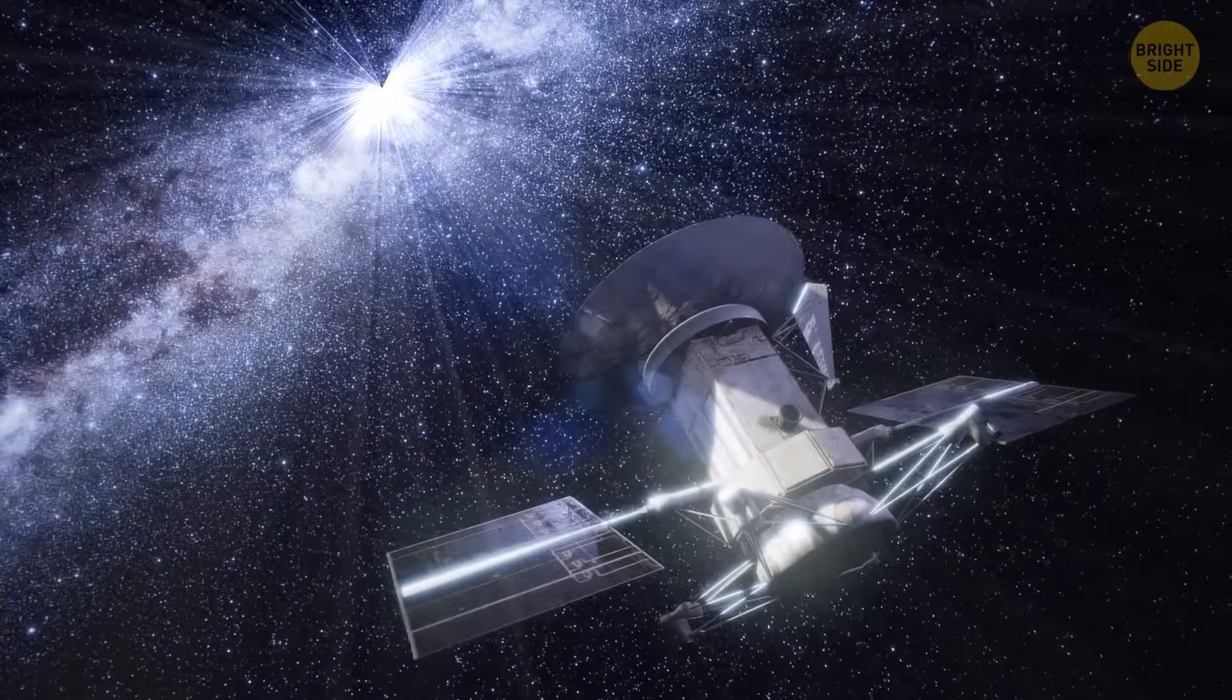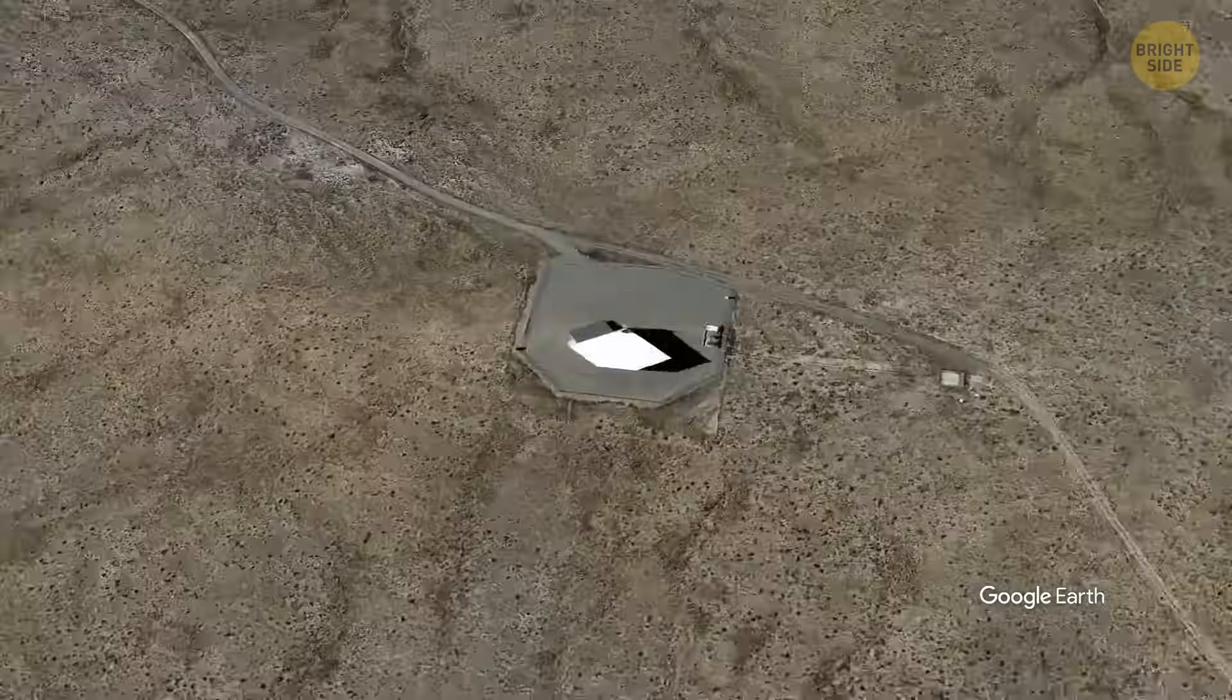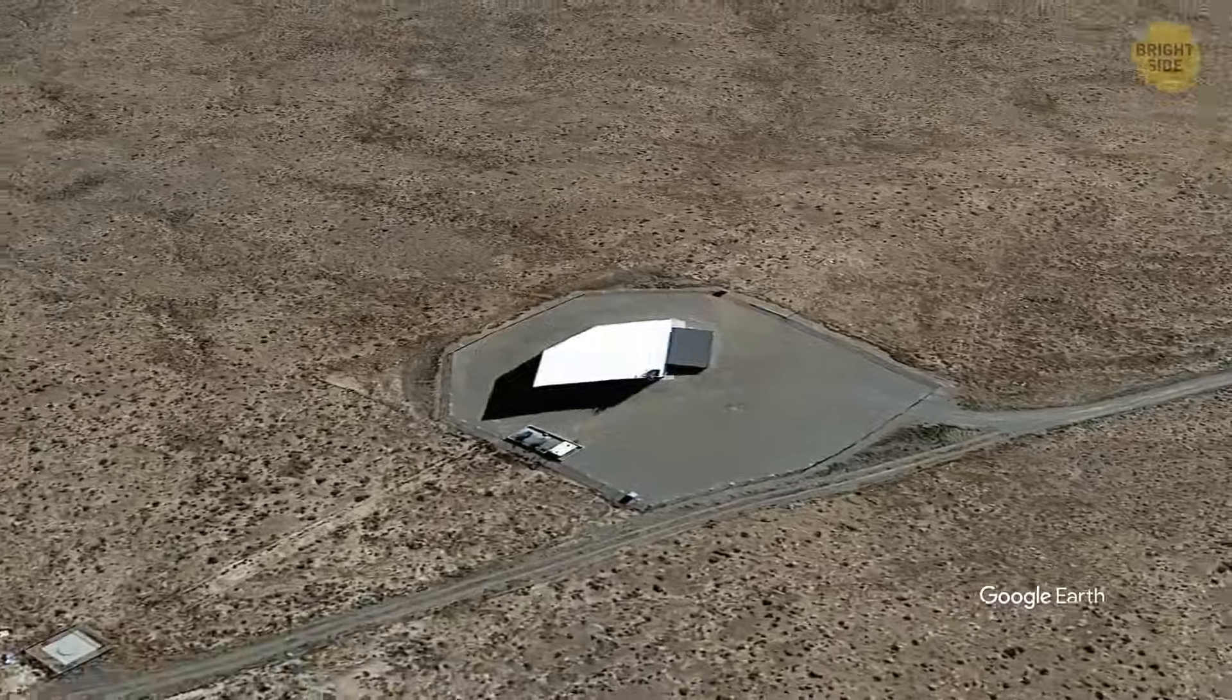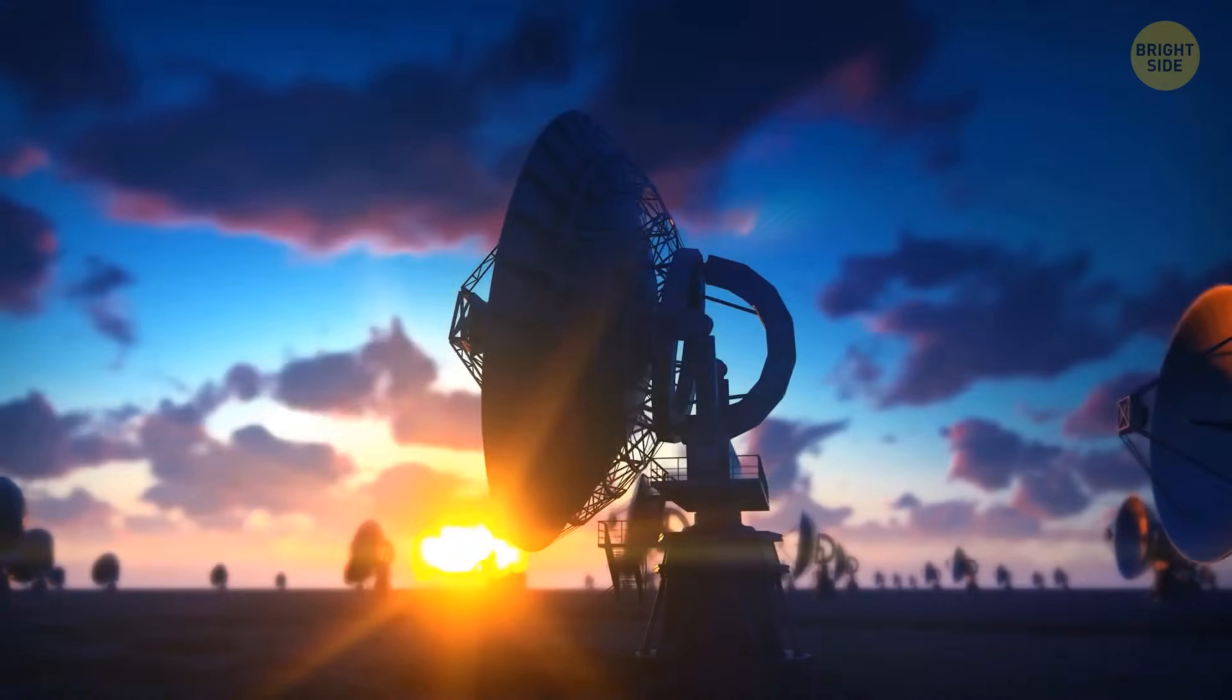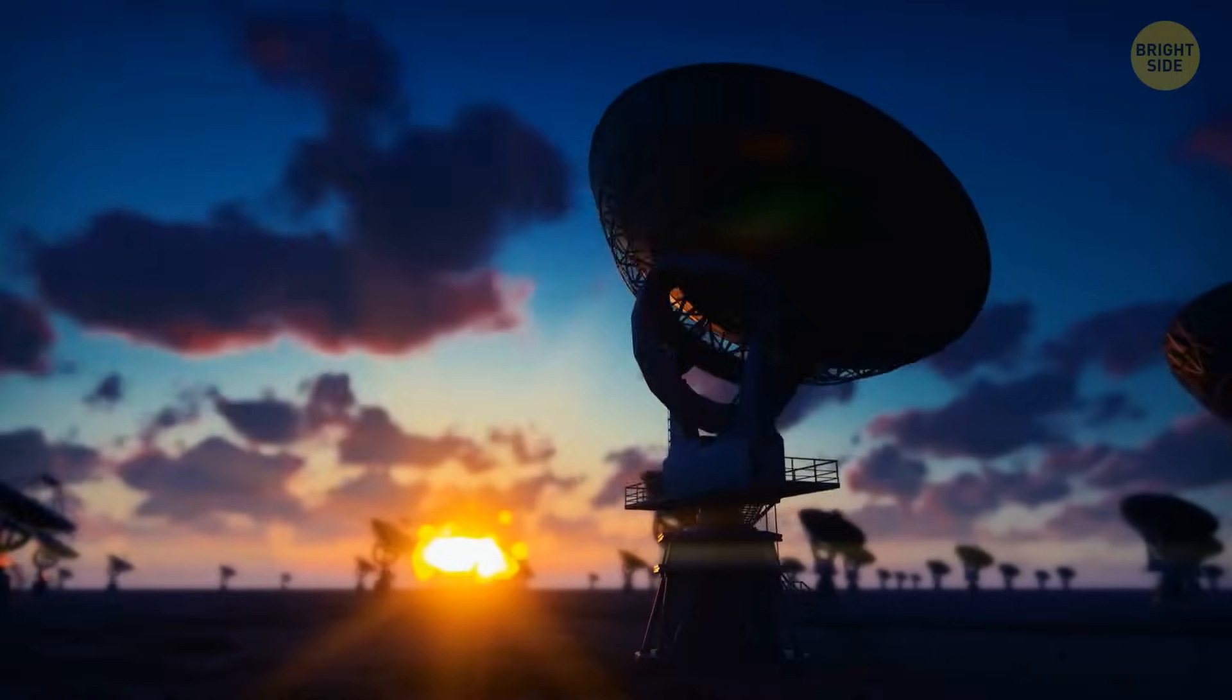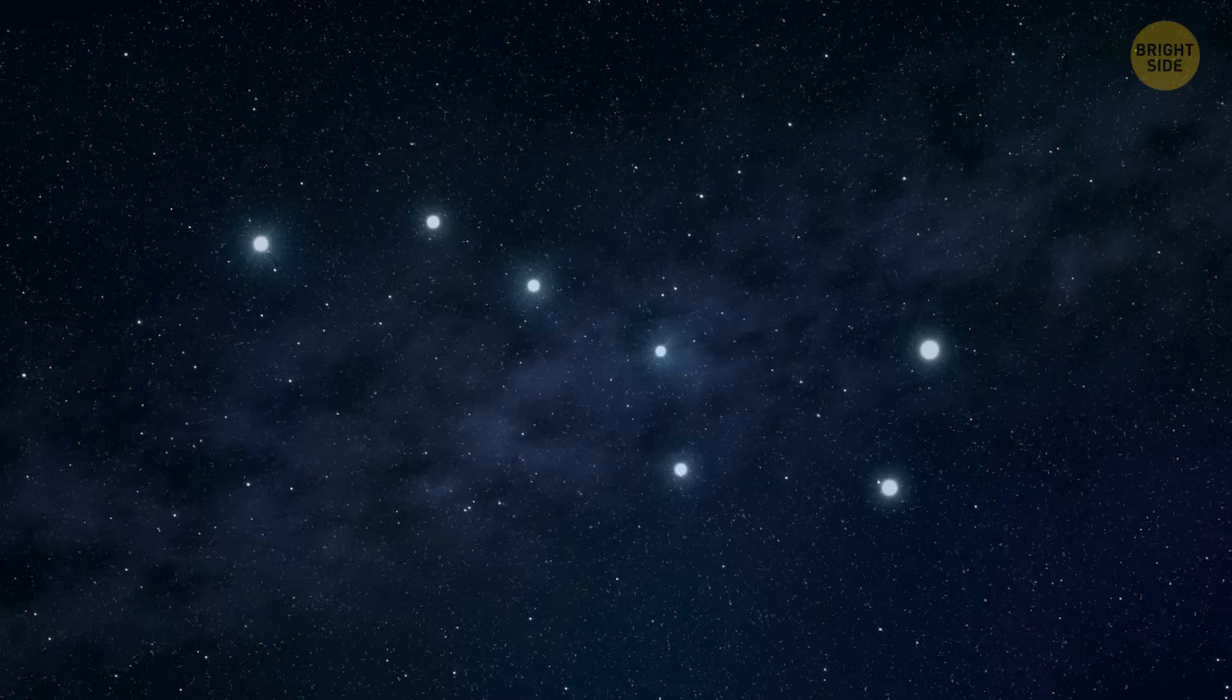Luckily, recent studies might give us some hints for the answer. In the large deserts of Utah, there's a thing called the telescope array. It's searching for super-fast particles called ultra-high-energy cosmic rays. Picture a massive grid of detectors spread across the desert, keeping an eye on particles all day long. And here's what it discovered recently.